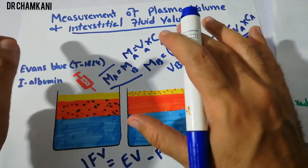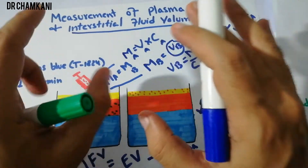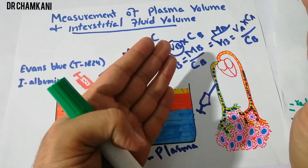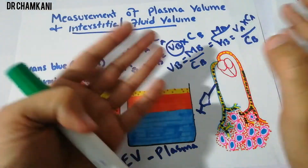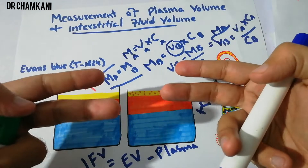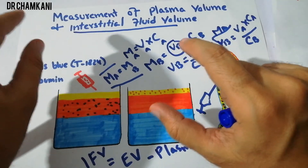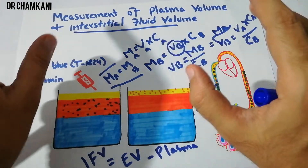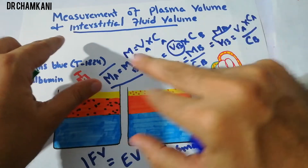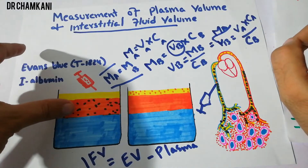If there is any confusion, you should watch the previous three or four lectures in which we discussed the indicator dilution method in detail, including how to determine total body water, extracellular fluid volume, and intracellular fluid volume. Watching those first will make this lecture easy to understand. That's all about the measurement of plasma volume and interstitial fluid volume. Thanks for watching.